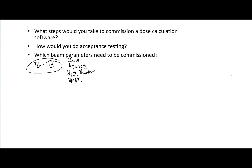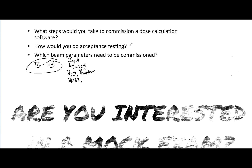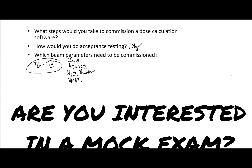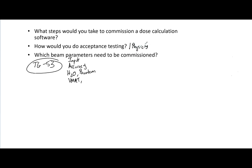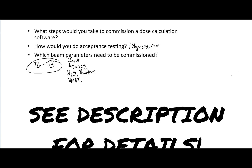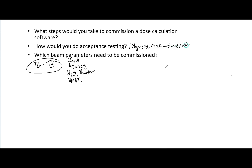Now, for acceptance testing, again reference TG53. Normally this involves only one physicist — remember the difference between commissioning and acceptance testing. For acceptance testing, you want to check the hardware, check the software, and then verify the accuracy of the dose calculation in specific circumstances.